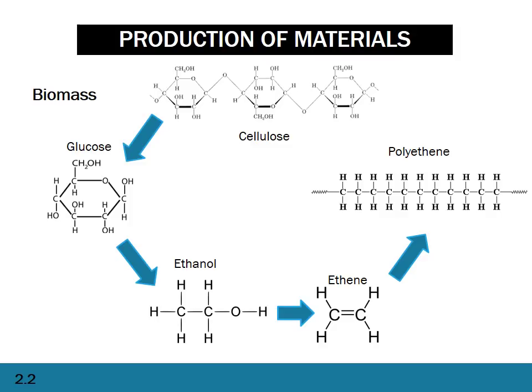For the production of ethanol and polyethylene, the steps go: cellulose → crack it → glucose → ferment into ethanol → dehydrate into ethene → polymerize into polyethylene. Having this in a diagrammatic flowchart form is extremely helpful. If you can nail down the different forms and steps between them, you'll be much more likely to get full marks — you will almost certainly get a question, if not several questions, on this exact flowchart.